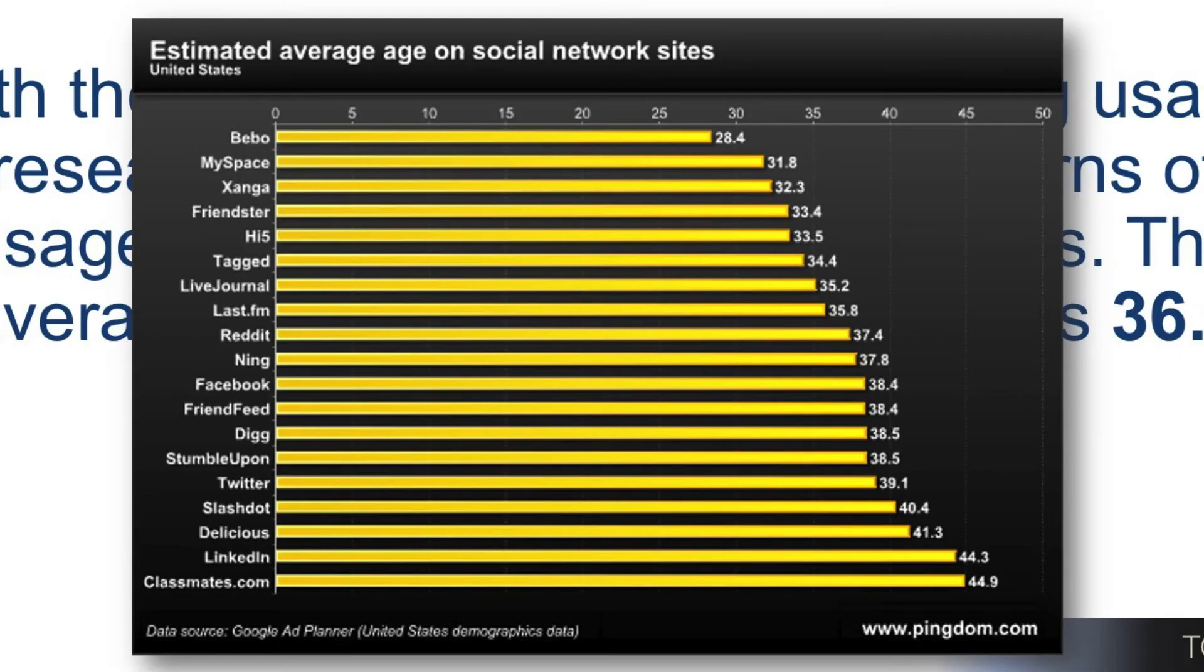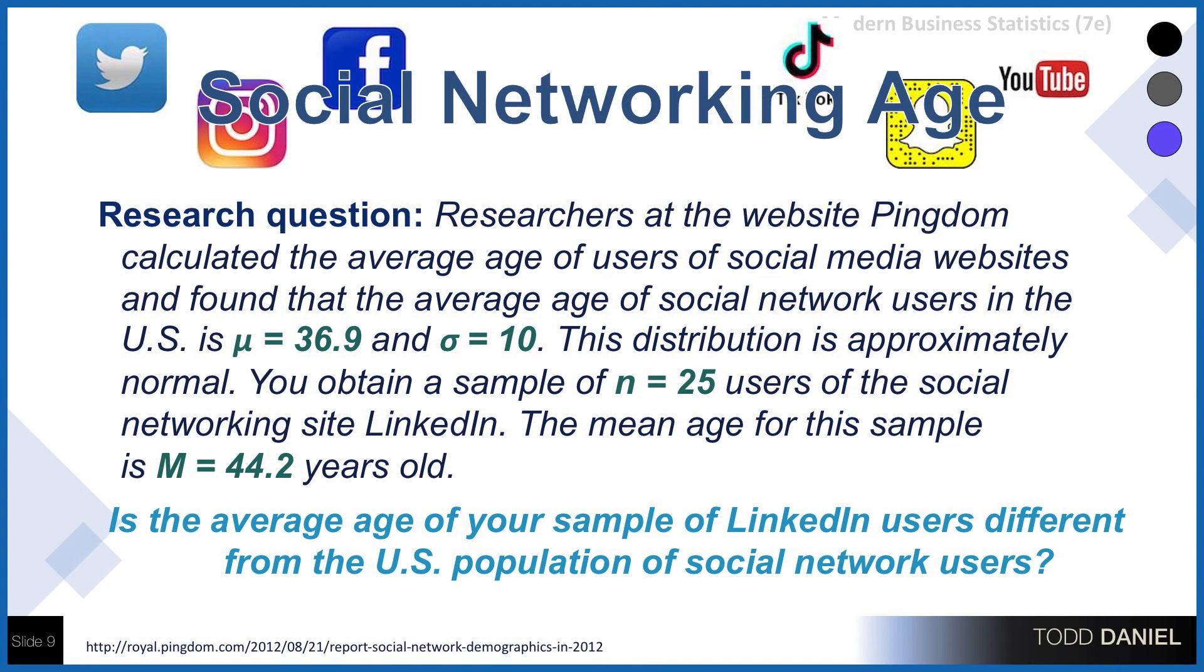So with that as our setup, let's take a look at an example that I want to show you about social media. Now these are the average ages for people on social networks and online communities, and you can see some of these may be familiar. We still have MySpace included in this example, and some of the other ones like LinkedIn a little older. Researchers at the website Pingdom collected an average age of users of social media websites and found that the average age of social network users in the United States is μ = 36.9 and σ = 10. And I'll just tell you I made up that standard deviation as part of this example.